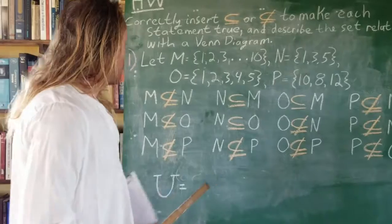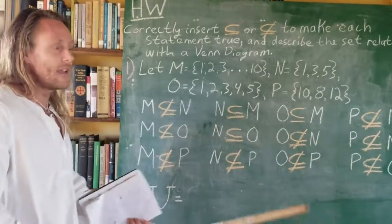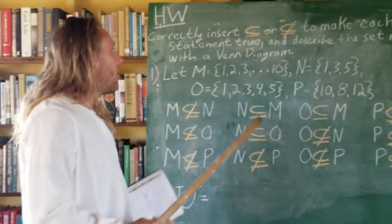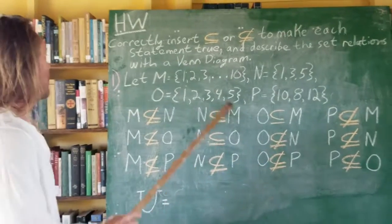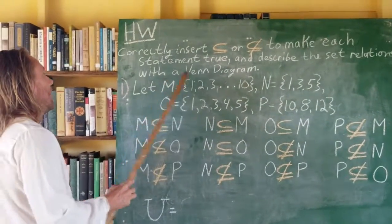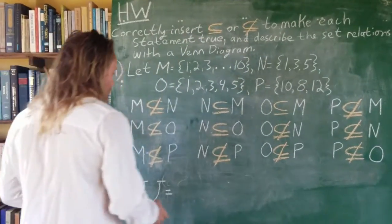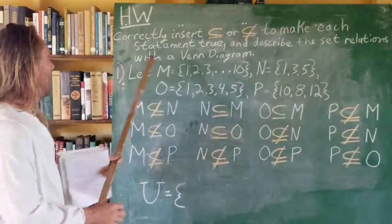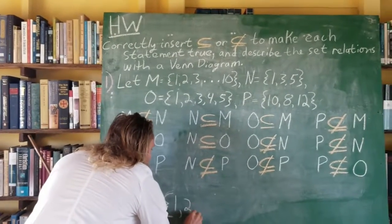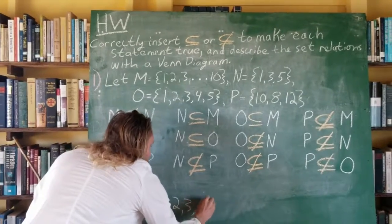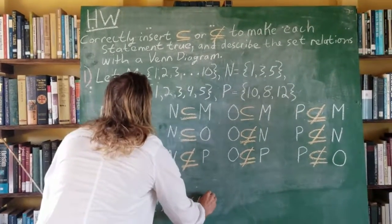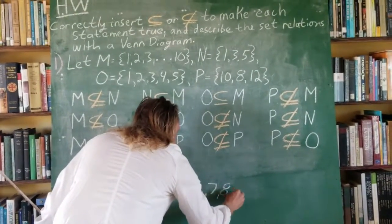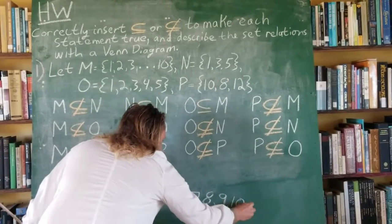The next task was to make explicit the universal set. The universal set is the set of basically all the elements under discussion — in this case, all the elements contained within M, N, O, and P. Our universal set would consist of all the elements in M: 1, 2, 3, 4, 5, 6, 7, 8, 9, and 10.